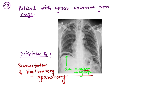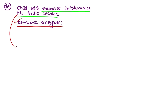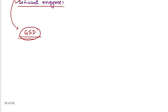Coming to question number 14: a child with exercise intolerance and McArdle disease was suspected. Which is the deficient enzyme in McArdle disease? McArdle disease is one of the glycogen storage disorders. Here is the list of glycogen storage disorders — type 1 is Von Gierke disease.